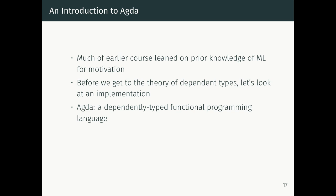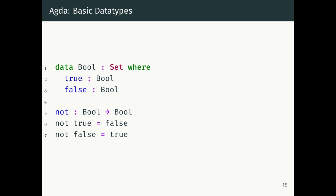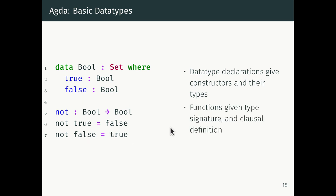Much of the earlier course we leaned on ML as a way of getting intuition for the type theory. Before we look at the theory of dependent types in the final lecture, we'll look at the implementation Agda so you can see what it looks like. Agda is a dependently typed functional programming language. You can go to the Agda homepage and download it yourself. Basic Agda looks quite a lot like Haskell: we have data type declarations where we say we're declaring the data type Boolean, which is a Set — Set is what Agda calls types.